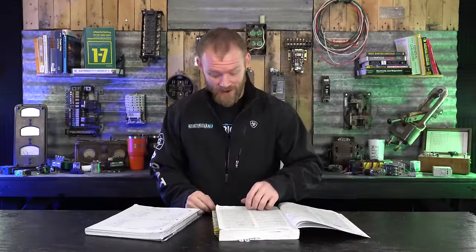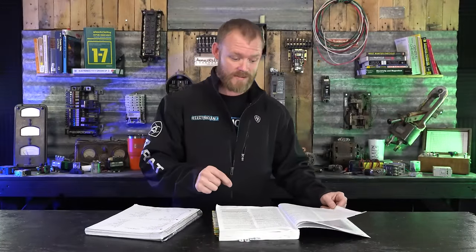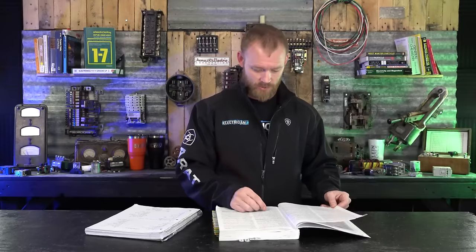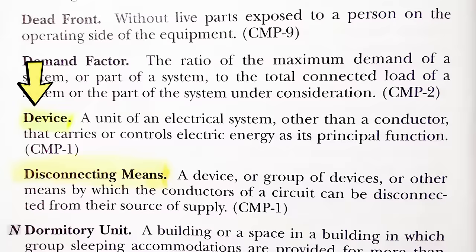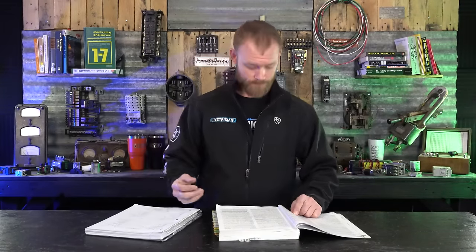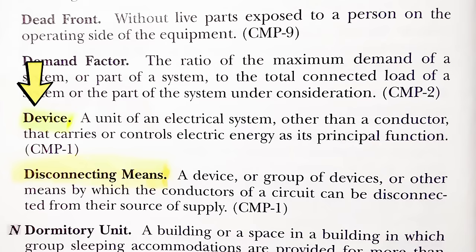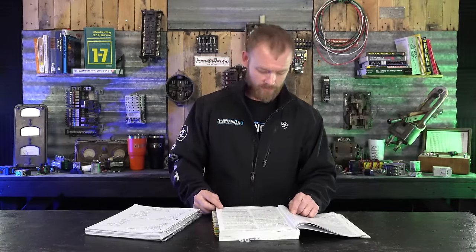Then lastly, we have device. So how does it delineate the difference between a device and appliance or utilization equipment? A device is a unit of an electrical system. So now we're talking about things that are on the premises wiring system, not things that get plugged into it or hooked up to it. It's other than a conductor, so we don't consider conductors devices, and that carries or controls electric energy as its principal function. So it doesn't only mean it's receptacles or switches, but it does mean it's something that as its principal function has current flowing through it. It carries that current and does some kind of function.